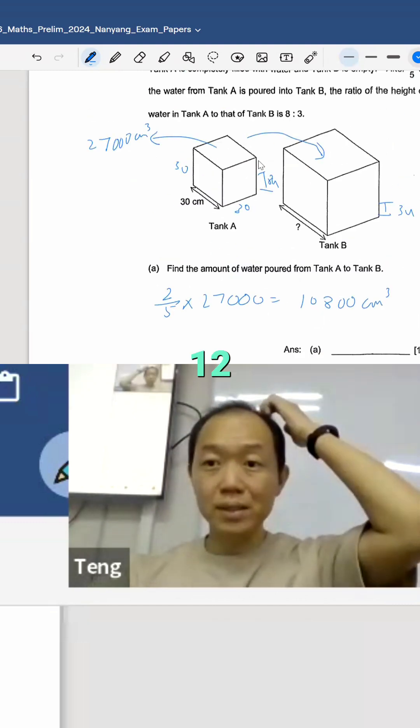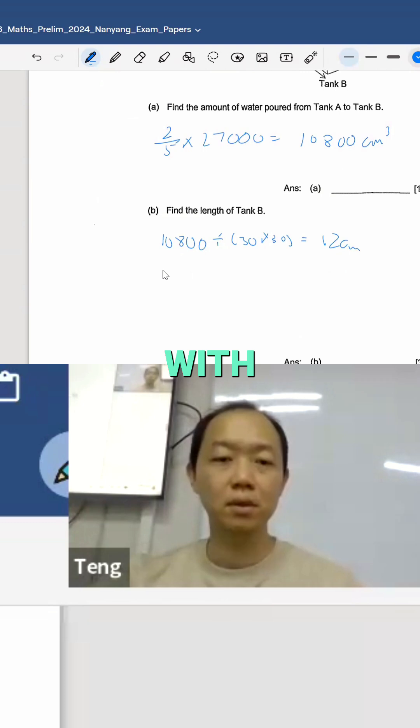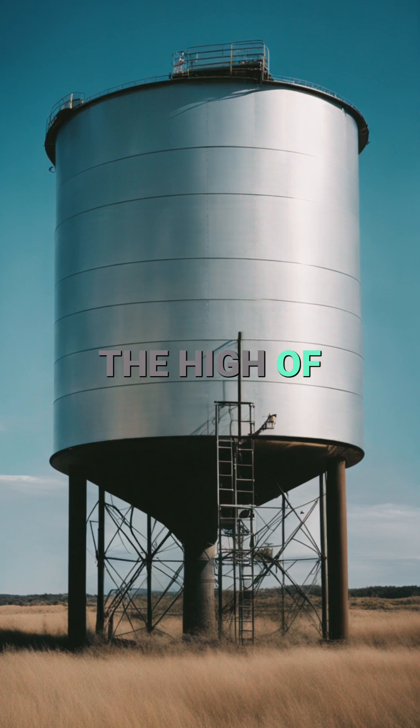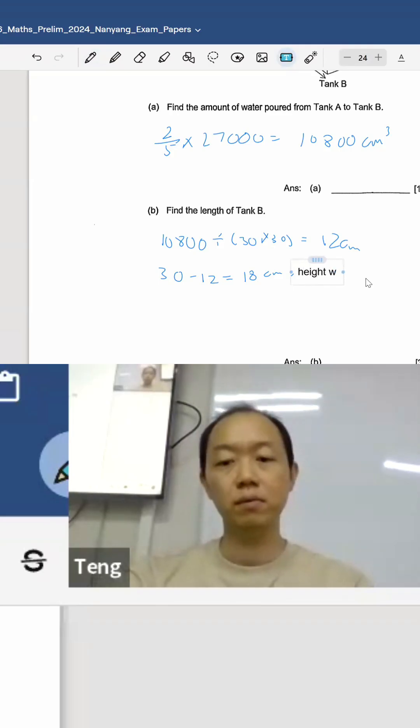So here, 12 cm. So it was at 30 cm, right? So it left with 30 minus 12 equals 18 cm. This is the height of tank, height of water in tank.